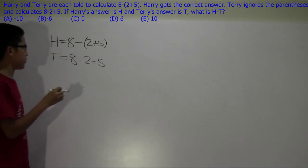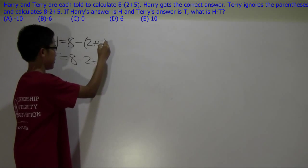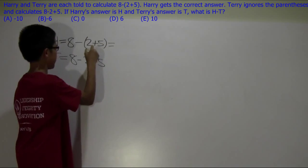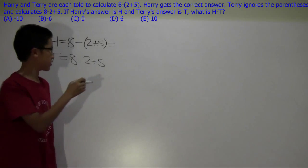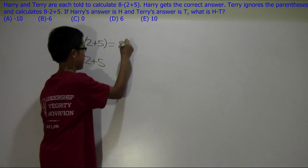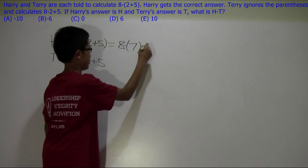So here we calculate h first, and because we always do parenthesis first by order of operations, we get 8 minus 7 equals 1.